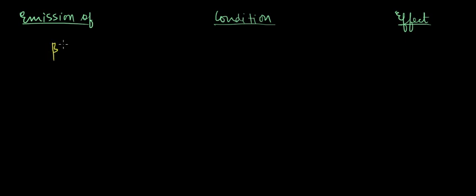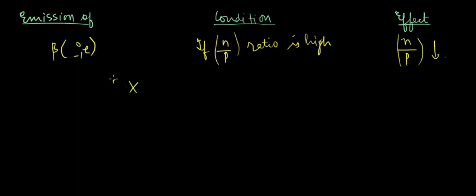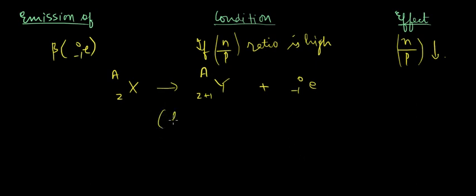If we are discussing the emission of a beta particle, which is a fast-moving electron emitted from the nucleus, the condition for emission is that the n/p ratio is high. The effect is that the n/p ratio decreases. For atom X with atomic weight A and atomic number Z, it disintegrates into atom Y — the atomic number increases and there is no effect on atomic mass.